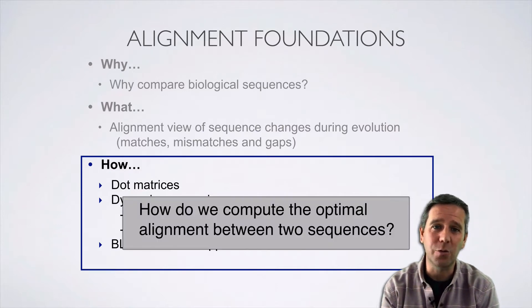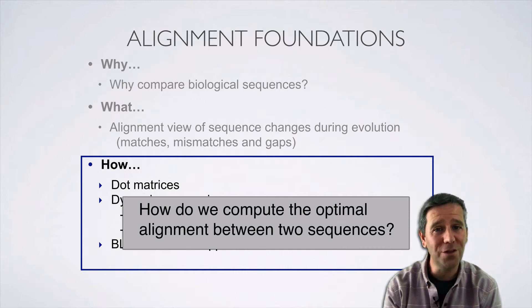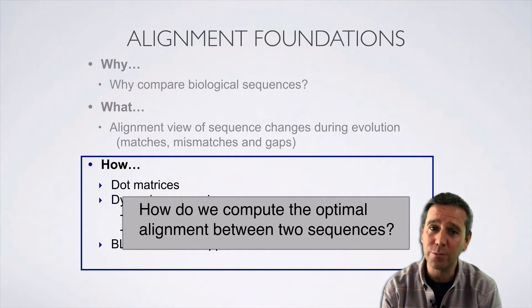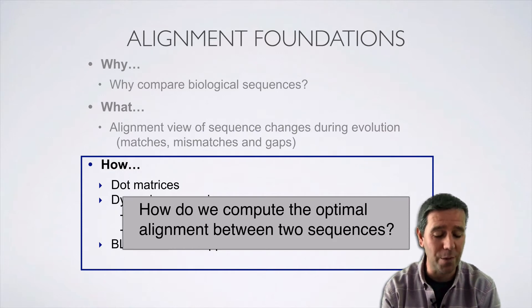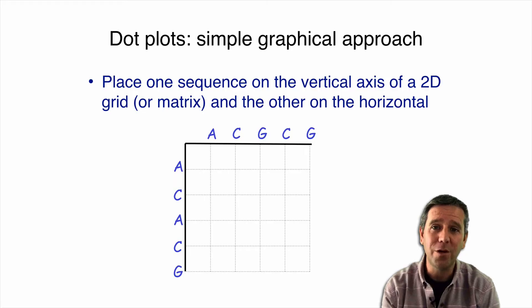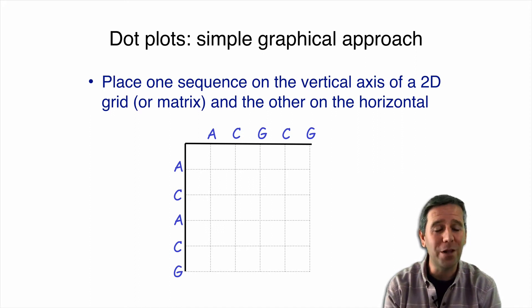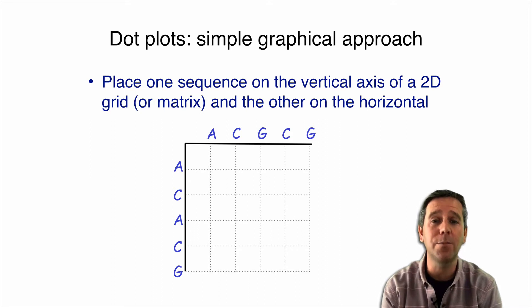Basically, answering this question: how do we actually compute the optimal alignment between two sequences? We're going to focus on dynamic programming approaches and how those are applied and adapted in the BLAST algorithm that we use most commonly for database searching. We'll build towards more advanced profile and hidden Markov model approaches, but before that, we want to build up our mental model by considering one of the most simple approaches possible.